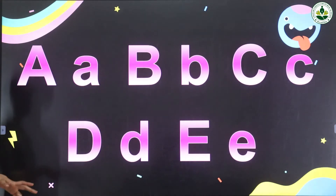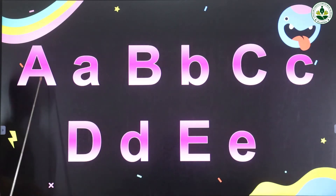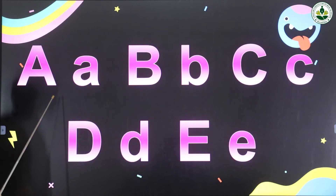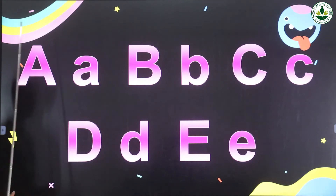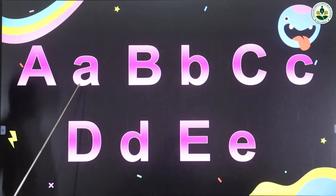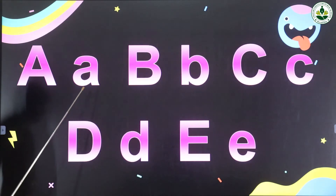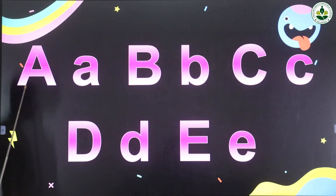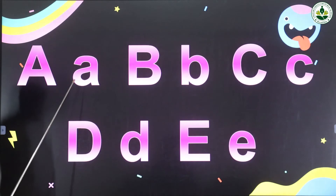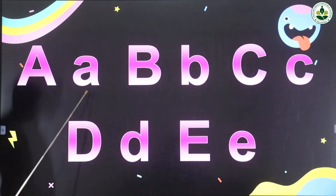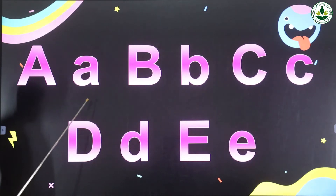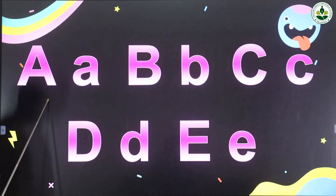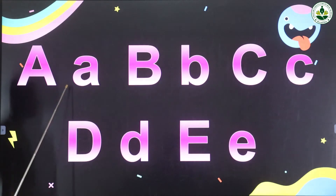Okay children, can you say which letter is this? Yes, it is letter A. And this one — small letter A. Very good. Capital letter A, small letter A. Once again, say aloud: Capital letter A, small letter A.